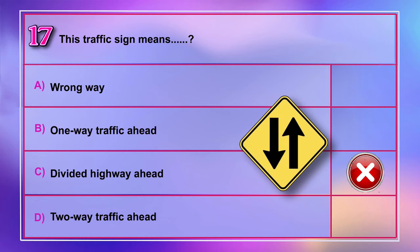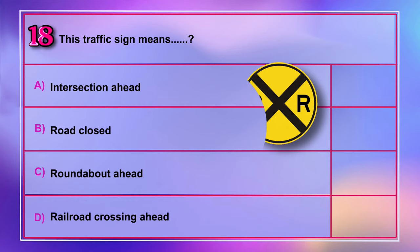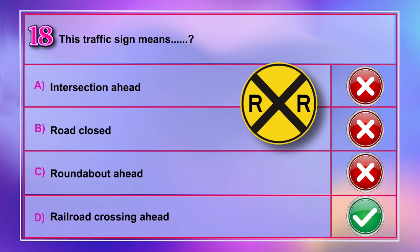Question number 18: This traffic sign means A) intersection ahead, B) road closed, C) roundabout ahead, D) railroad crossing ahead. Correct answer is D: railroad crossing ahead.